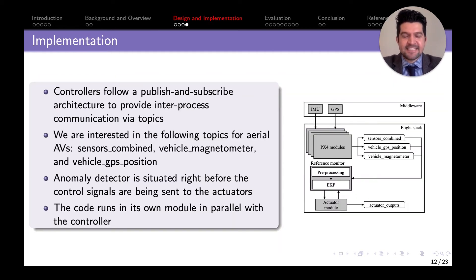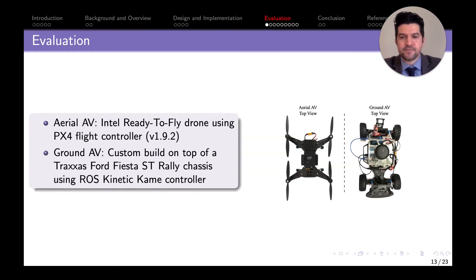When it comes to implementation, both controllers follow a publish-subscribe architecture in which modules communicate by publishing and subscribing to topics. The main topics of interest are sensor combined, vehicle GPS position, and vehicle magnetometer. The anomaly detector is situated at this location where it gets the information, preprocesses it, gives it to the Extended Kalman Filter, estimates a prediction, compares it with real values, and analyzes how those values compare against actual measurements.